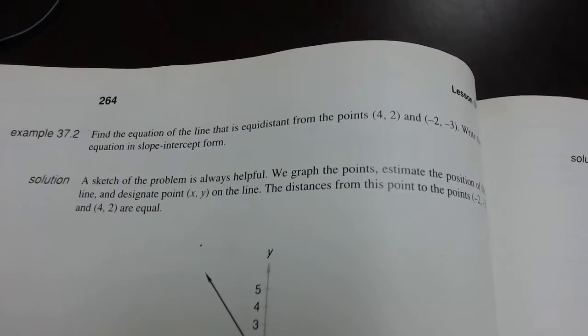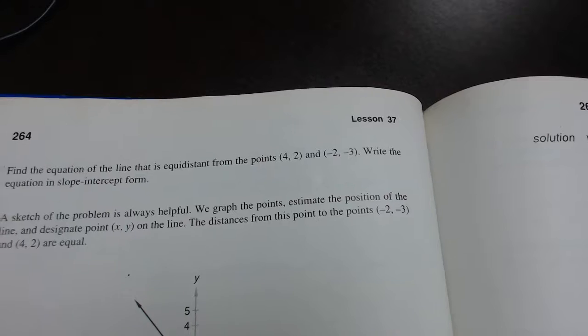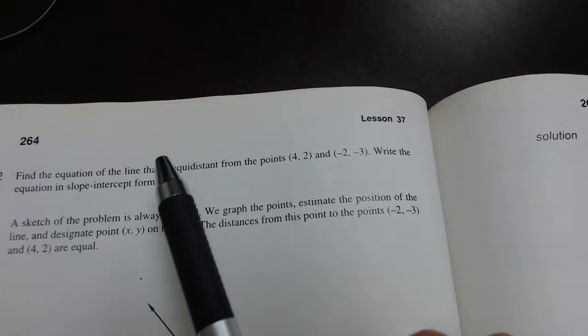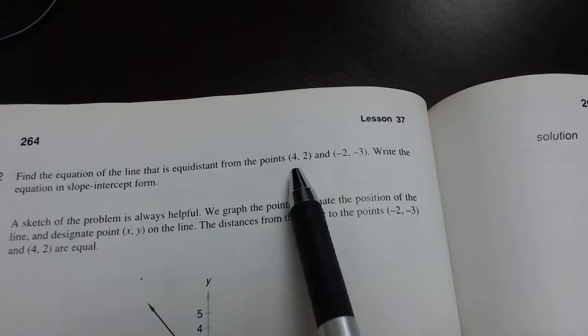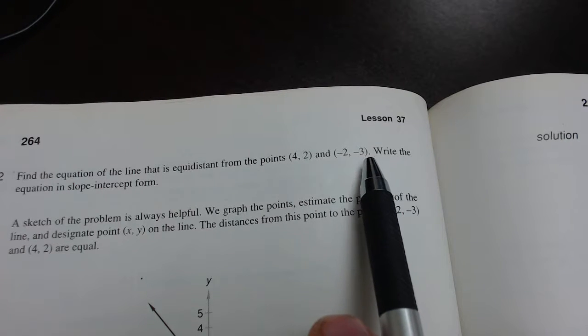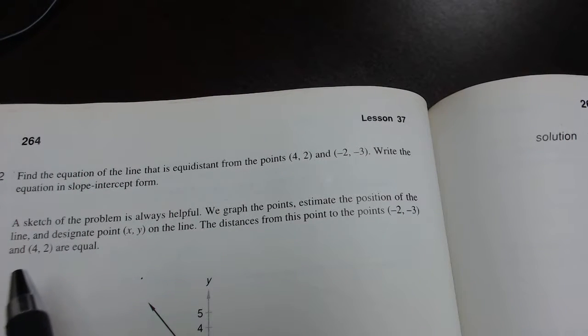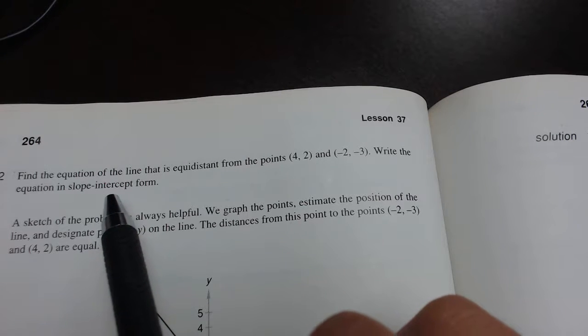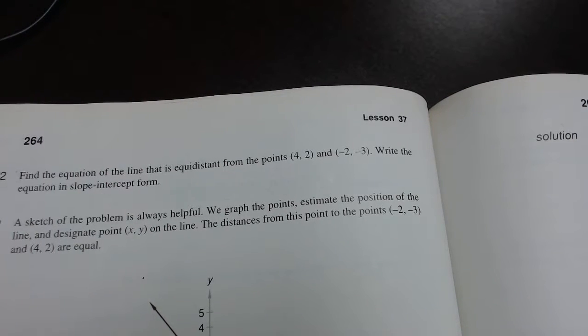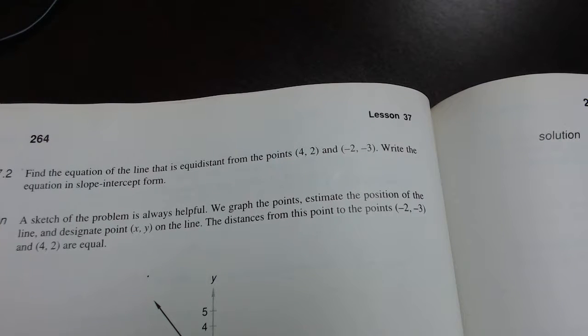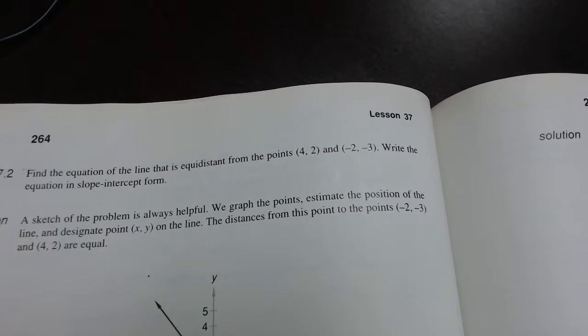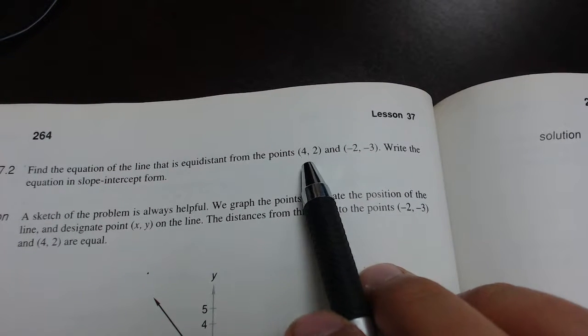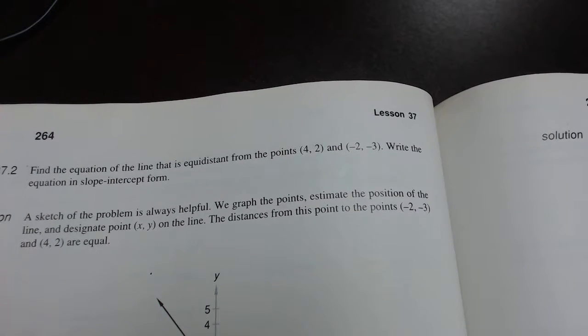On example 37.2, they tell us to find the equation of the line that is equidistant from the points (4, 2) and (-2, -3), and write the equation in slope-intercept form — that being our Y equals MX plus B format. If you remember the distance equation back on page 252, there are four different ways we can write it. All we have to do is take our points (4, 2) and (-2, -3) and plug them into two distance equations set equal to each other.